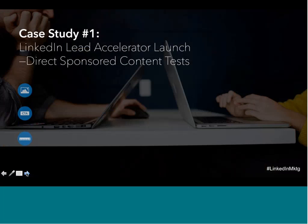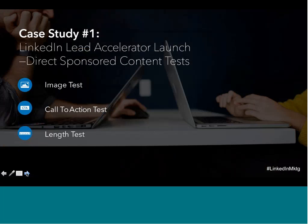And now I will hand it over to Cass. Thanks, Alex. So next, we want to walk you through an example of a series of tests we ran using our Direct Sponsored Content feature. In February, we launched a new product called LinkedIn Lead Accelerator. It was a big initiative for us in Q2, and we wanted to take this as an opportunity to really challenge our team to find the perfect sponsored update. Our demand gen teams and content teams joined forces and built out an A-B testing plan that would take place over the course of about three months.